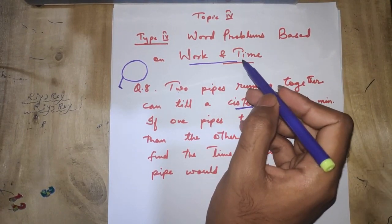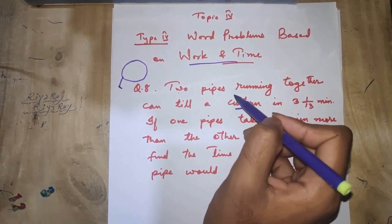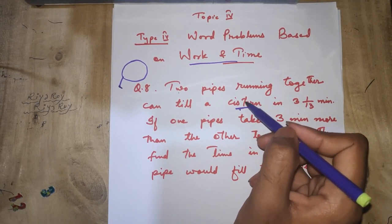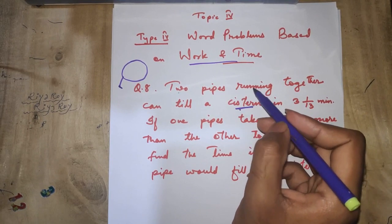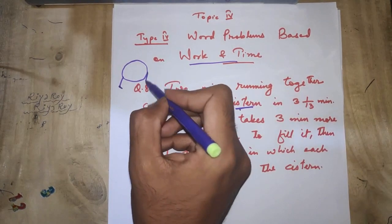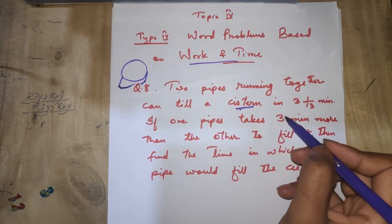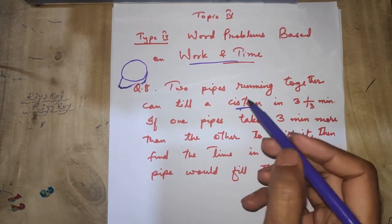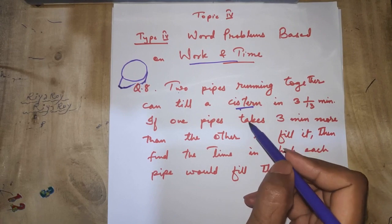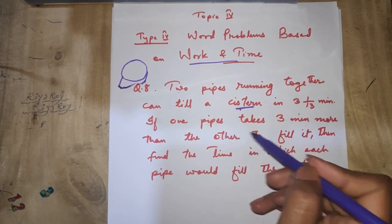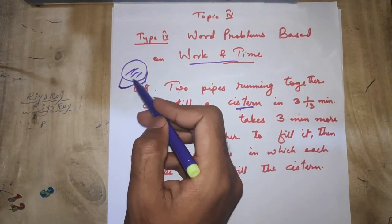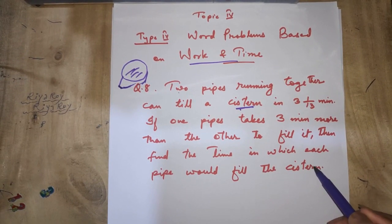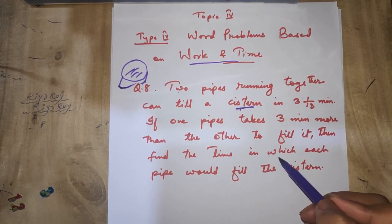Our question is: two pipes running together can fill a cistern in 13 and 1/13 minutes, but if one pipe takes three minutes more than the other to fill it, then find the time in which each pipe would fill the cistern.